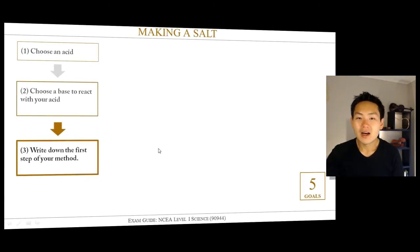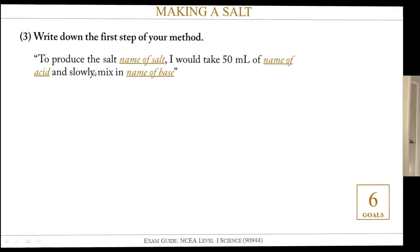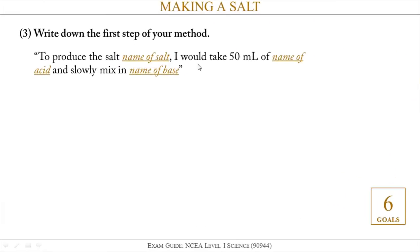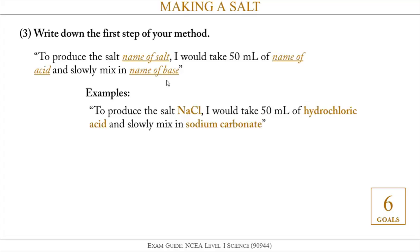The first step in your method is to write something like: to produce the salt sodium chloride, I would take 50 mL of hydrochloric acid and slowly mix in whichever base you want. Your base could be the hydroxide, carbonate, or oxide — so if your salt was sodium chloride you would pick sodium hydroxide, sodium oxide, or sodium carbonate. For example: to produce the salt NaCl, I would take 50 mL of hydrochloric acid and slowly mix in sodium carbonate.